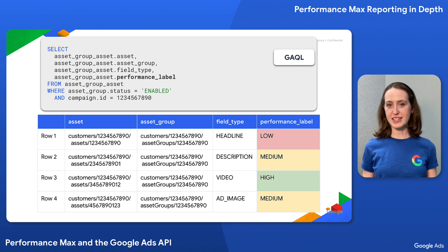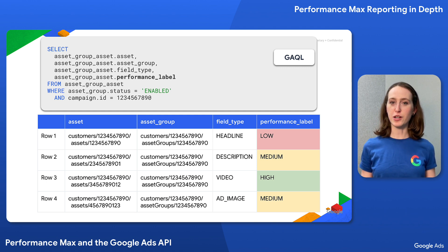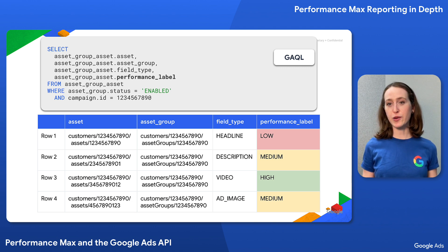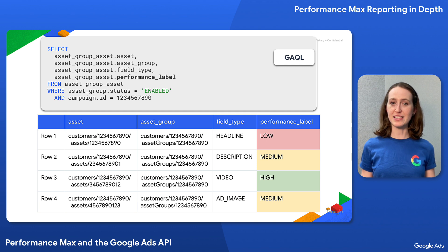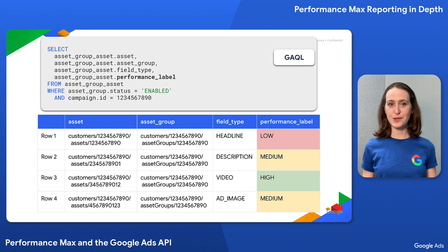If you manage advertising on behalf of businesses, or you have a platform for businesses to configure their Google advertising, you might display all the lower performing assets as part of an asset group optimization workflow, where users can create a new asset of the same type to replace it. Taking this a bit further, you could show the high performing assets of that type as examples of what leads to stronger performance. Note that it's possible that an asset group will have no assets with a low performance label, which means that all assets are considered to be working well towards your specified business goal.